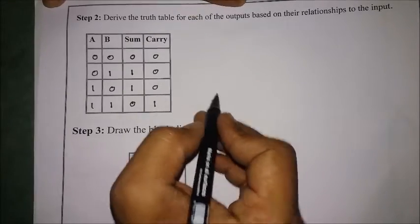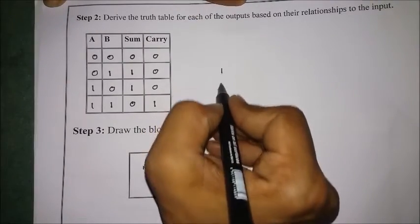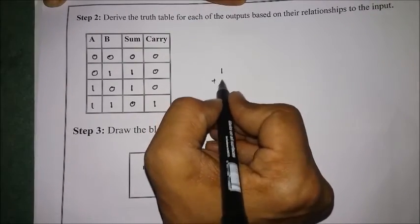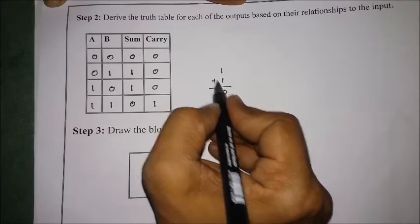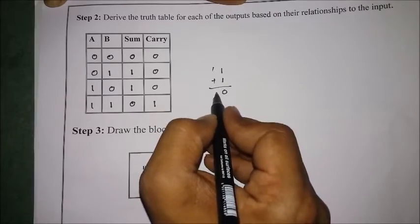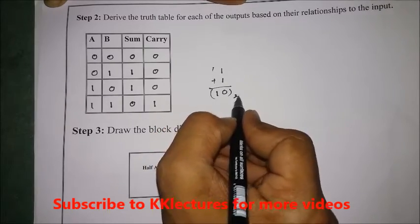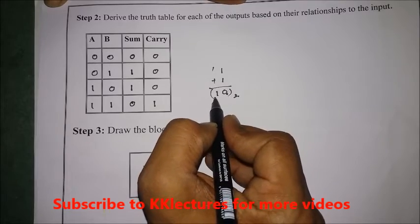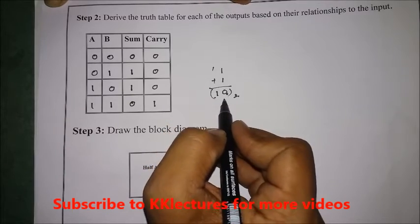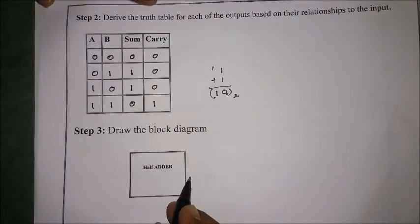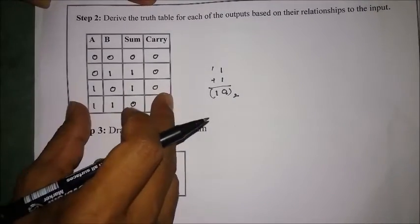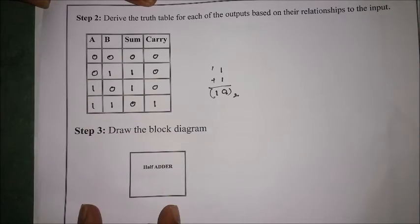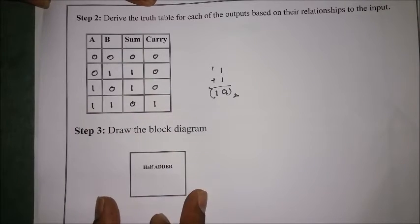For one plus one: one plus one equals zero with a carry of one, which represents binary two. So we get sum=0 and carry=1. After completing the truth table, the next step is to draw the block diagram.